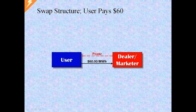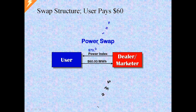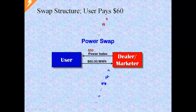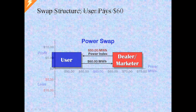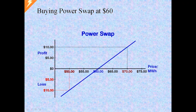If we take the supply contract and replace the physical power with power index cash flow, we create a swap, one that also provides an offsetting long position. It should be obvious that the breakeven index price would be $60. If index went to $70, the result would be a $10 profit to the user. If index fell to $50, the user would lose $10. In other words, the swap creates the exact same price risk position as the fixed price supply contract.